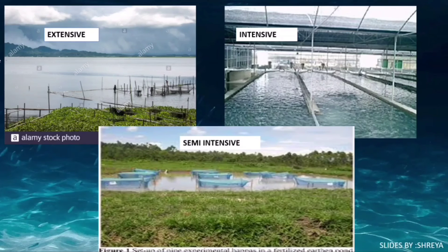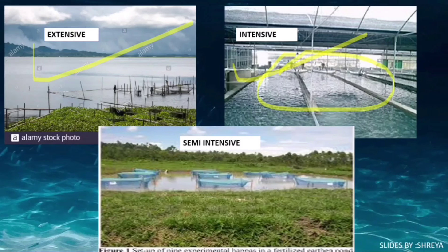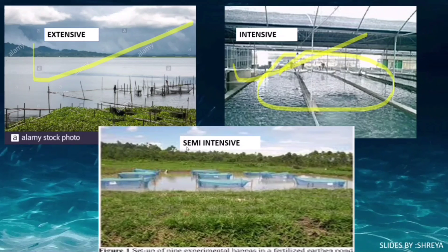To recap: extensive culture involves large ponds with no facilities or technologies and lower yield. Intensive culture involves smaller ponds with higher facilities and higher yield. Semi-intensive is the transitional stage between both of these techniques.